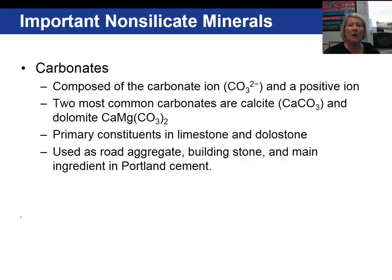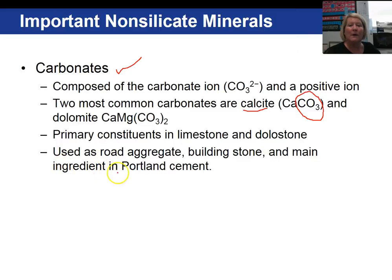Carbonates are quite common as a non-silicate mineral. The two most common are calcite, which is calcium carbonate, and dolomite, which is calcium magnesium carbonate. The CO3²⁻ anion is what classifies it as a carbonate. It makes up limestone and dolostone, which are used for road aggregate, building stone, and portland cement.